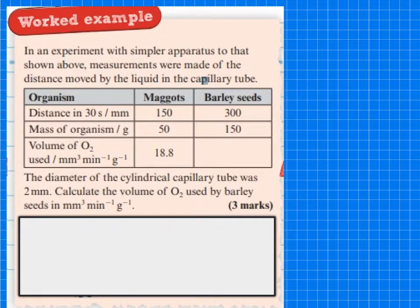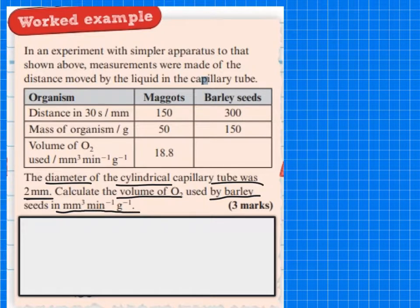So the type of question they might ask, they might give you some data like they have here. And then they'll ask you to work out the diameter. Well, it's telling you the diameter of the capillary tube was two millimetres. And it says calculate the volume of oxygen used by barley seeds in millimetres cubed per minute per gram. So the first thing is we need to look at the distance moved. So it has a distance moved in 30 seconds. So this is the distance moved in the manometer in the measuring tube. So how much it moved over time with barley seeds.